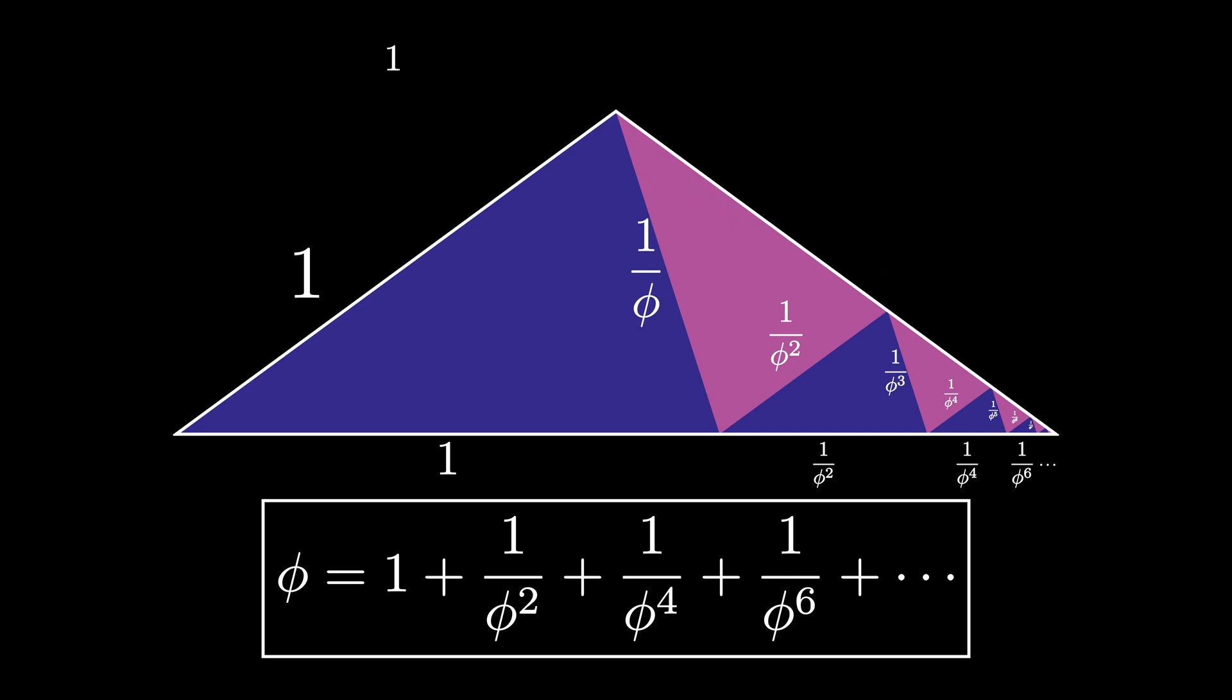On the other hand, it's also given by the sum of the lengths of the pink shaded triangles sitting inside. But each of the pink shaded triangles has a length given by 1 over an odd power of the golden ratio.